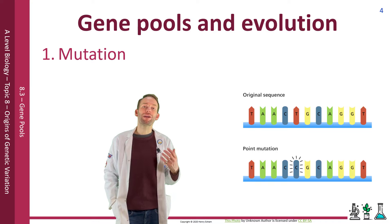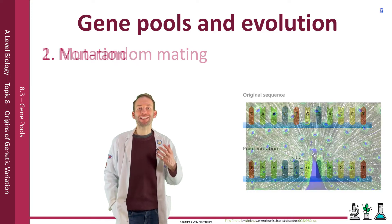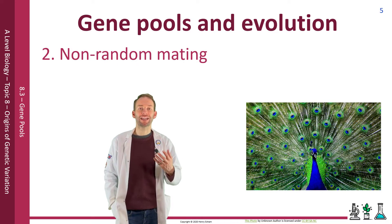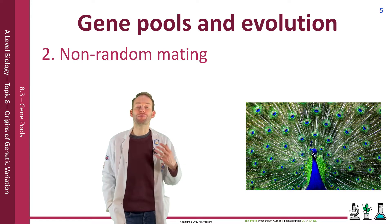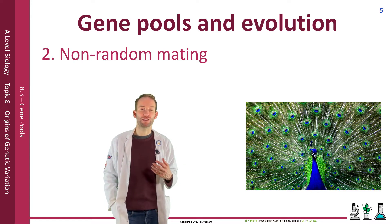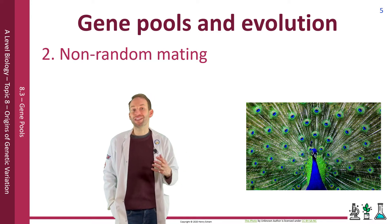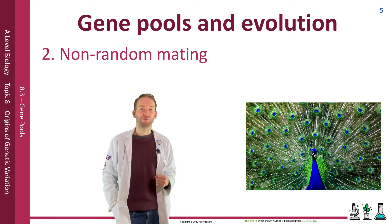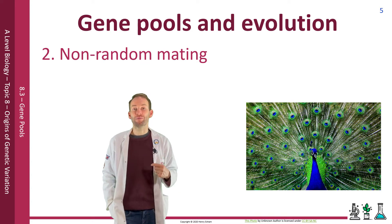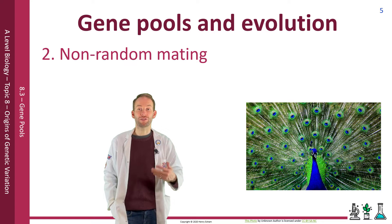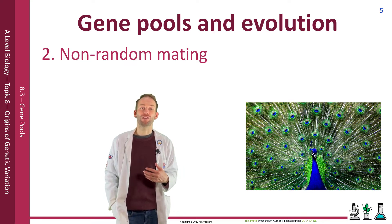Non-random mating is the idea of sexual selection, which occurs where mates choose individuals based on certain characteristics. Humans can interfere with this via selective breeding. Inbreeding in some populations also occurs, which increases the frequency of homozygotes.